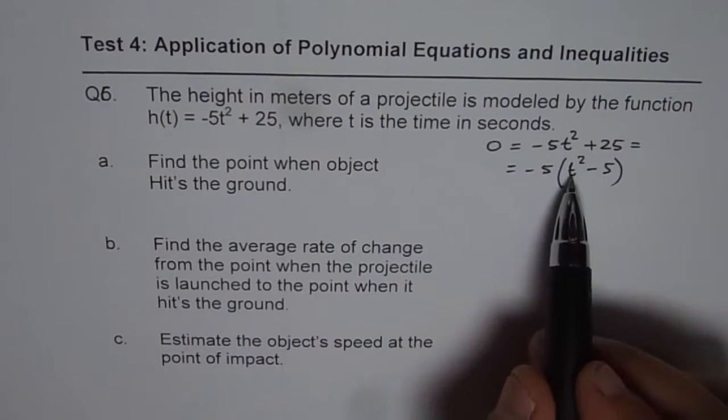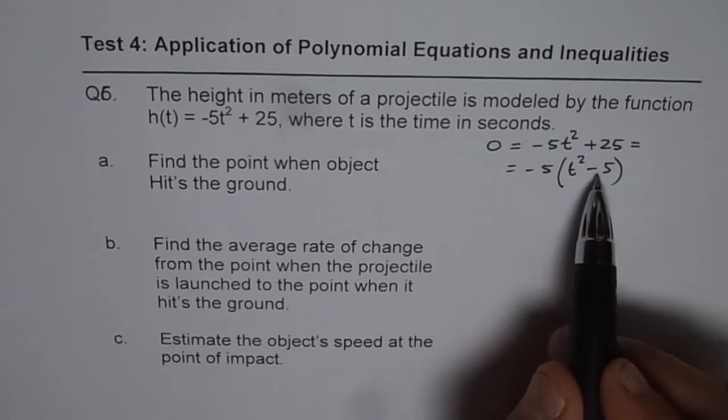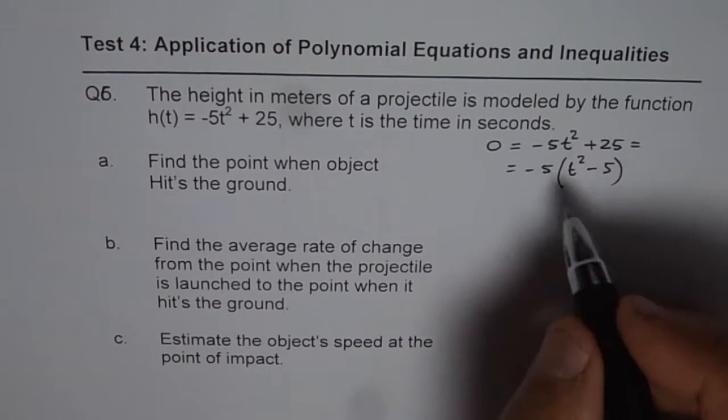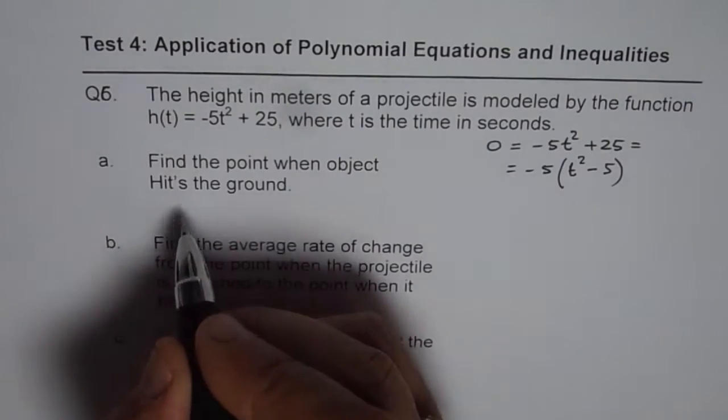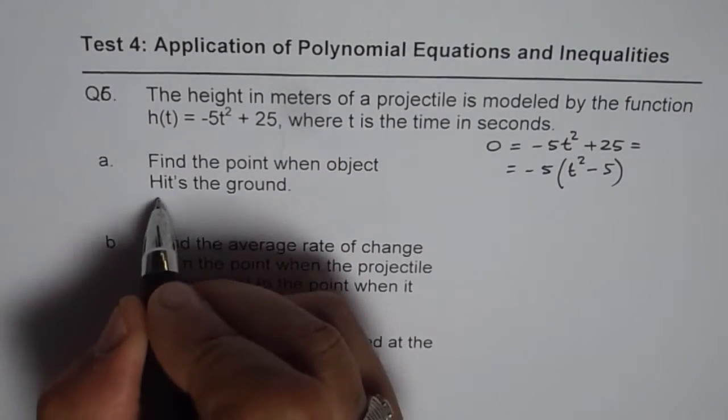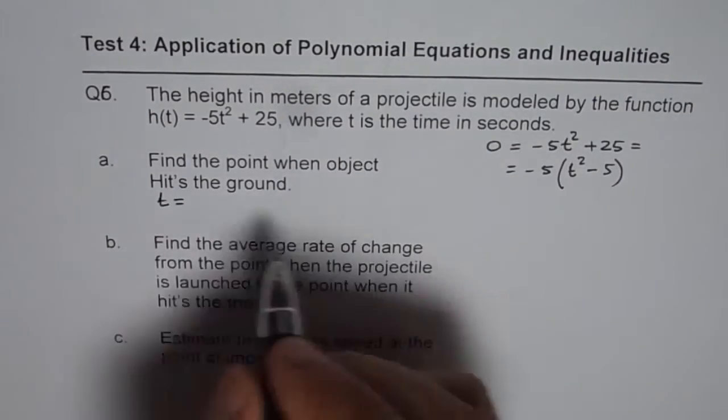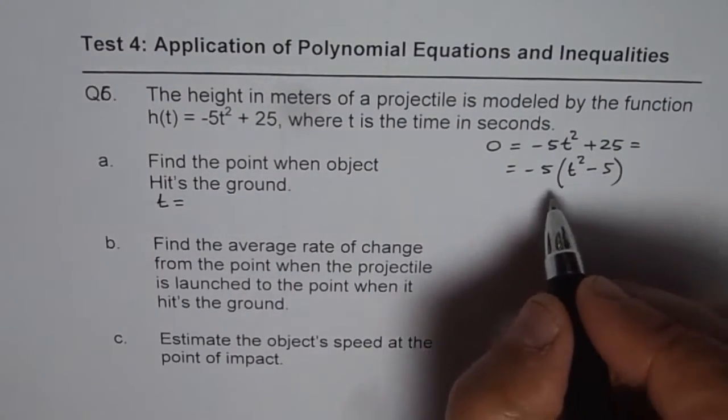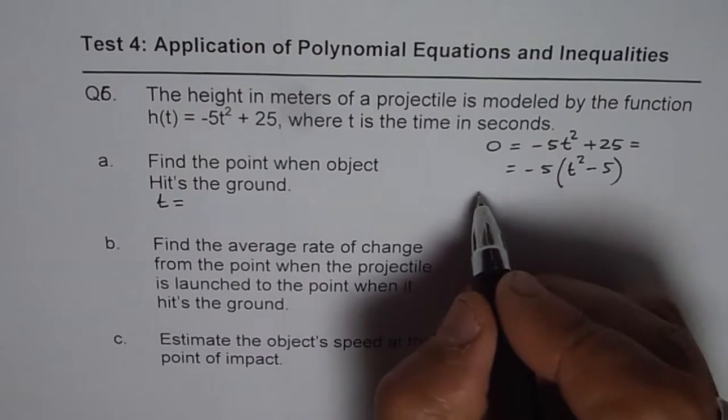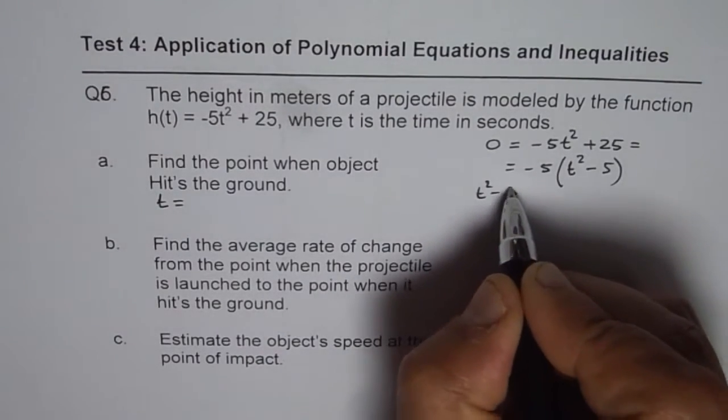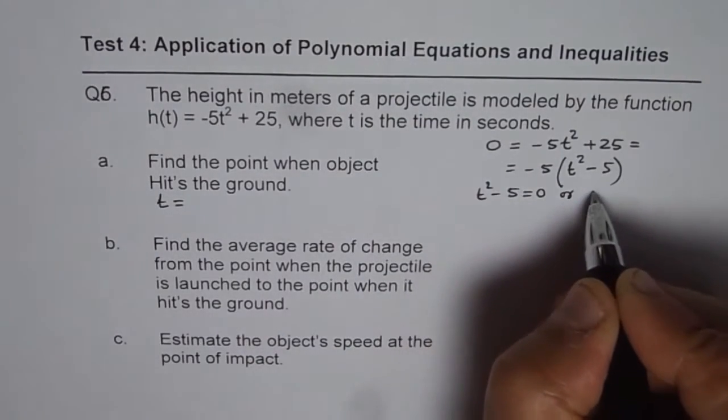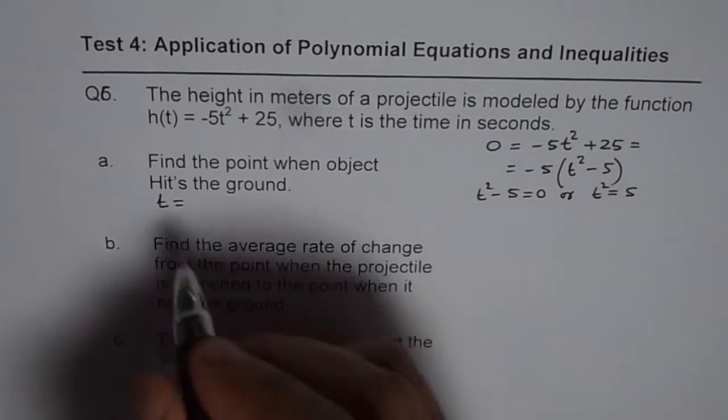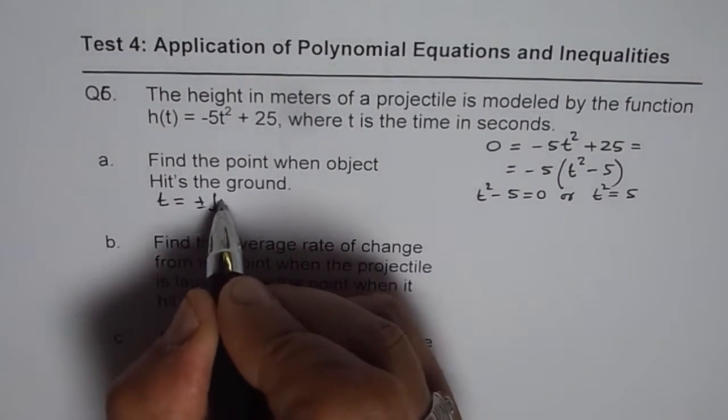So the possible answers are square root of 5. So t² should be 5, so t could be, let us do like this, we will add one more step. So that is t² - 5 = 0, or t² = 5, or t = ± √5.